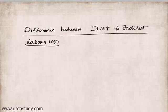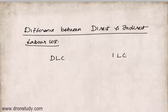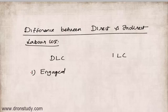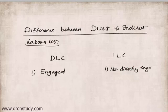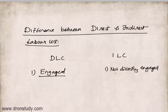Let us discuss the differences between direct labor cost and indirect labor cost. The first difference is engagement: direct labor cost is incurred on payment to labor who are directly engaged in the production process, whereas indirect labor cost is incurred on laborers who are not directly engaged in the production process. If you are engaged, it is direct; if not engaged, your cost comes under indirect.